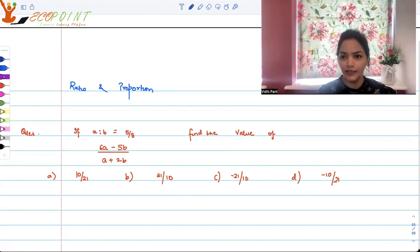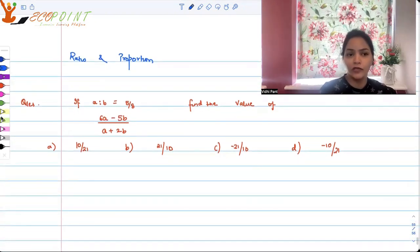If a is to b, that is the ratio of a and b is 5 by 8, then the value of 6a minus 5b upon a plus 2b is, these are your four options. So what exactly the value will turn out to be?